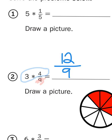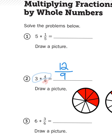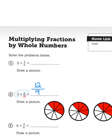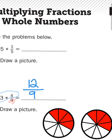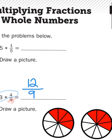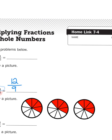Now, 12 ninths is what we call an improper fraction. And to help us better visualize how much that is total, we need to convert that to a mixed number. It just so happens that I have some graphics to help us visualize.